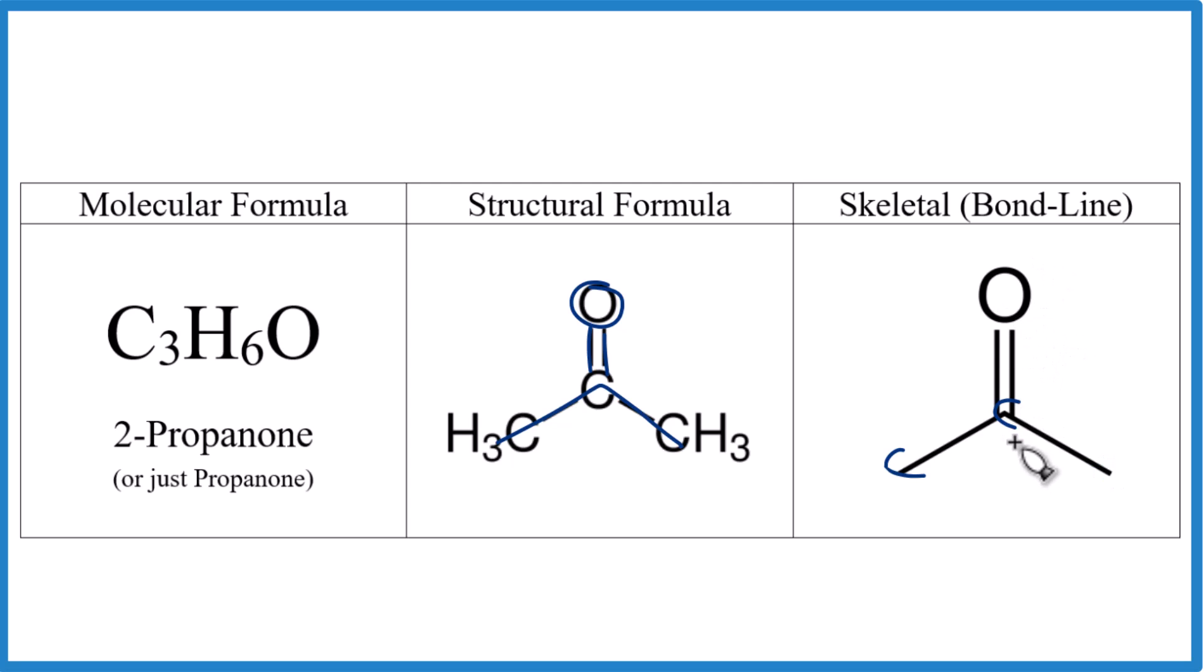There's our double bond oxygen. And we do write the oxygen in. We don't write the carbons or the hydrogens. And then there are lone pairs on the oxygen. There'd be a lone pair here and here, but we don't need to write that either. All of that can be figured out just looking at the skeletal or bond line formula.